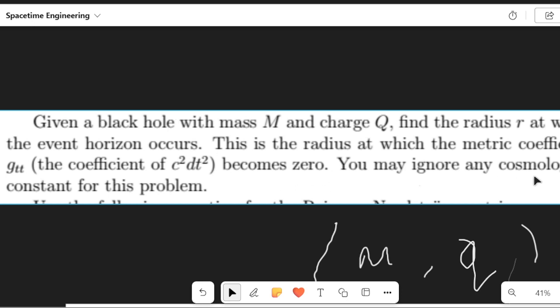This is the radius at which the metric coefficient, right, g_tt, imagine this, where this becomes zero. Okay? On this event horizon. And you may ignore any cosmological constant for this problem. So, just imagine this, right? We're ignoring the idea of a cosmological constant. So, that's a more, that's a crazier problem to get into.